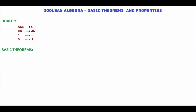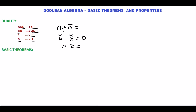The duality theorem states that from one Boolean relation we can derive another Boolean relation. For this we have to change logical AND to logical OR, logical OR to logical AND, 1 to 0, and 0 to 1. Suppose we have a Boolean relation a + ā = 1. From this we can derive another Boolean relation: write variables as is, change plus to dot, write ā as is, and change 1 to 0. That is, a · ā = 0.